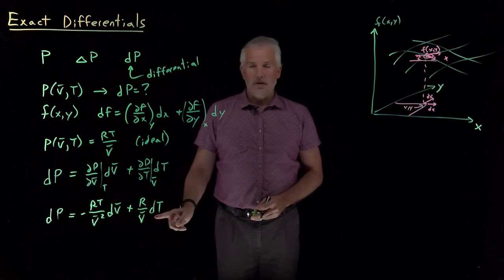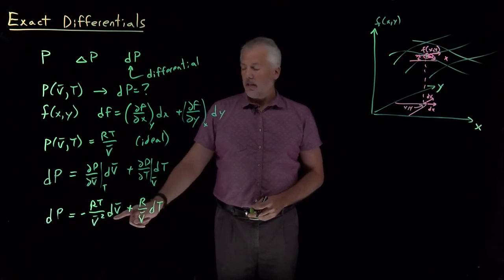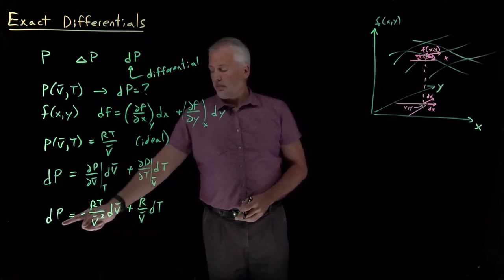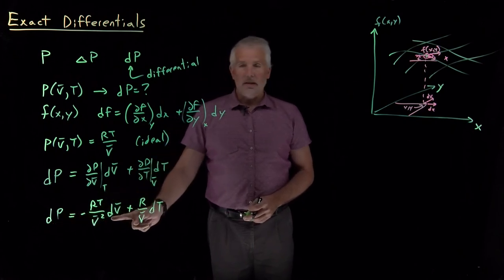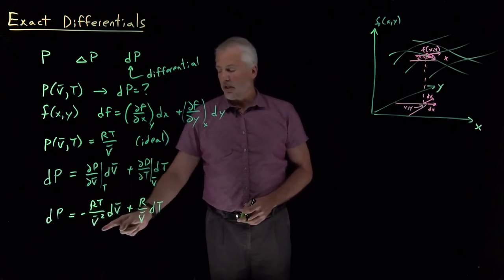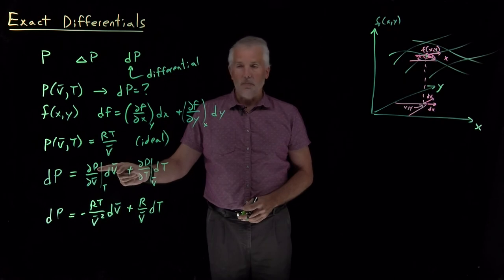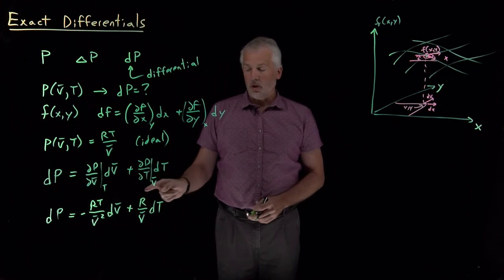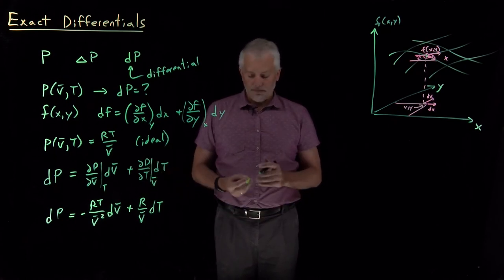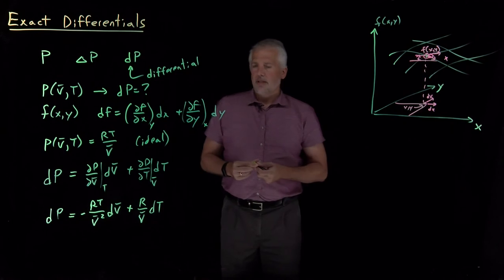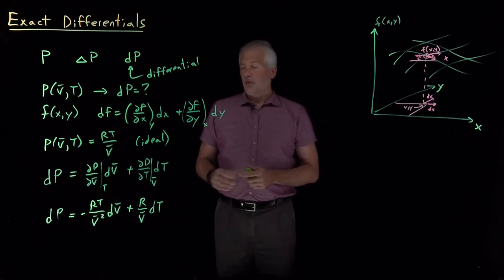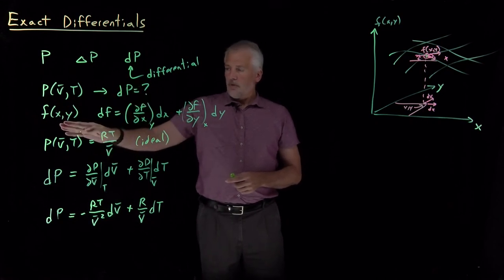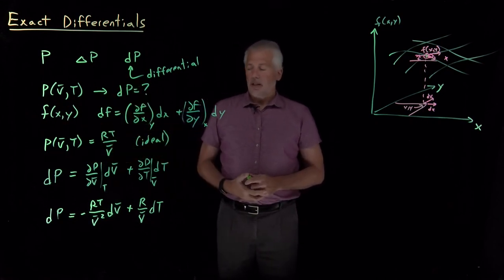So for a gas obeying the ideal gas equation, in response to changes in volume and temperature, the pressure drops whenever we increase the volume (negative sign) and increases whenever we raise the temperature (positive sign). The magnitude of the pressure drop per unit volume change is RT/V̄² — that's just the slope — and R/V̄ tells us how much p changes as we change temperature.